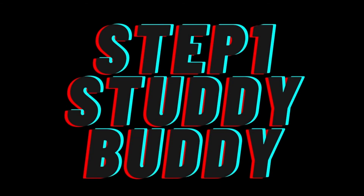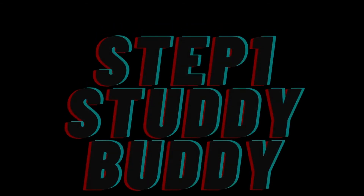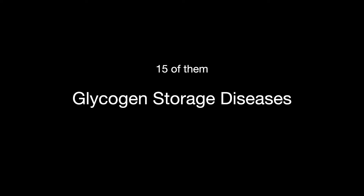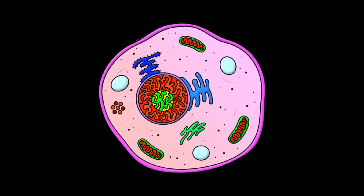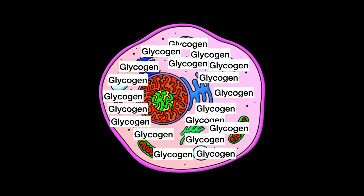Welcome to the Step 1 Review Study Guide. In this lesson, we learn about glycogen storage diseases. There are 15 types of glycogen storage diseases that have all been identified, caused by an autosomal recessive gene. They all cause an accumulation of glycogen in the cells that can be tested for via a periodic acid-Schiff stain test.